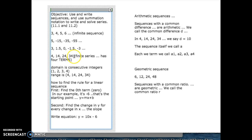Now here's one. Since there's no dot dot dot, it's a finite sequence. It's 4, 14, 24, 34. So it has four terms. So each sequence, these things are called terms. But these have infinite number of terms up here.